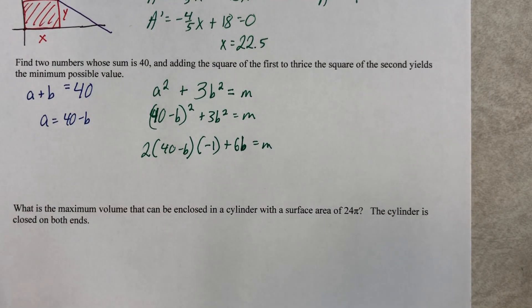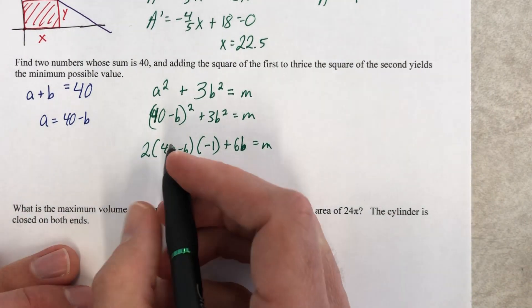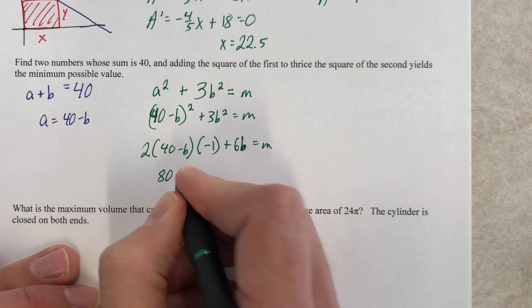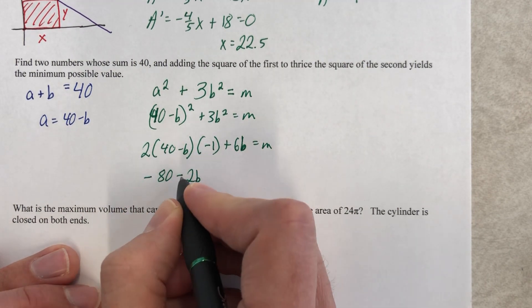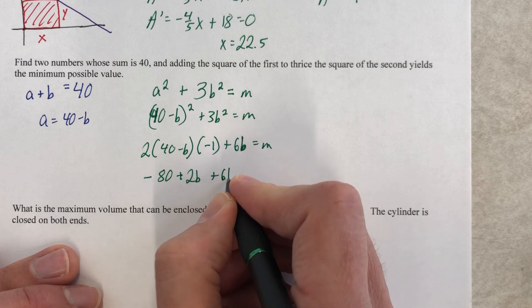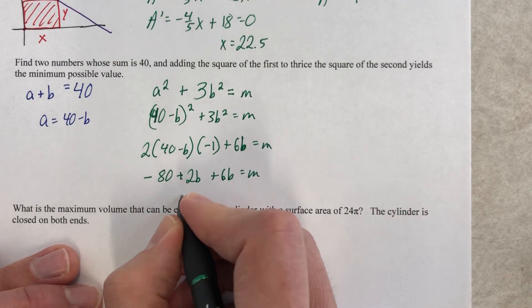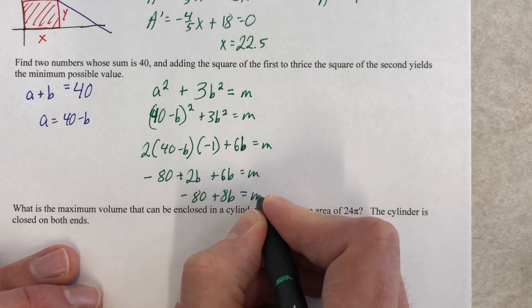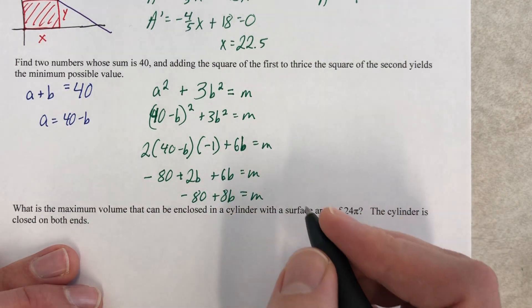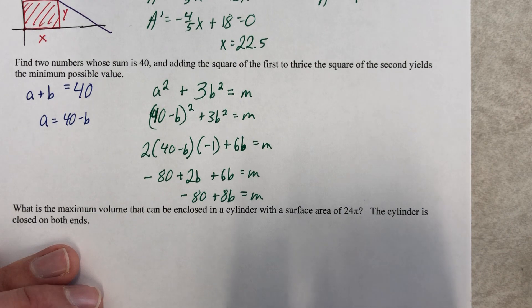Well, let's keep going. At this point, we can really distribute, so really simplify. 80 minus 2B times negative 1. So let's change some signs, and then plus 6B, and that's equal to M. So negative 80 plus 8B equals M.